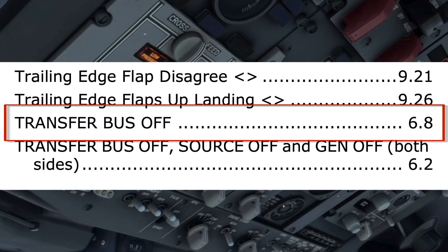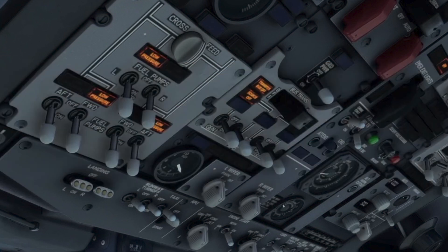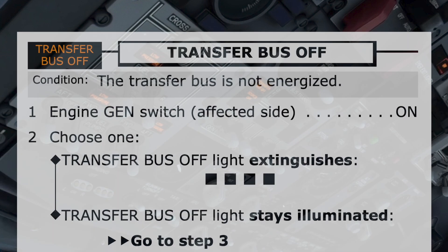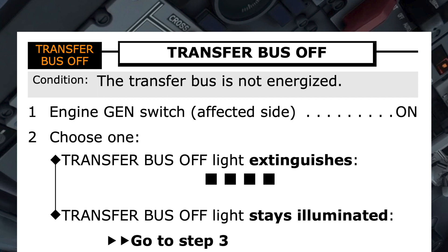To the right is the page reference, which on an electronic flight bag would be a hyperlink. Once the checklist is opened, the title and condition are read to the pilot flying, and agreement sought that this is the correct checklist to perform. Note on the top left is an image which replicates the button itself, helping to ensure the correct checklist has been selected.